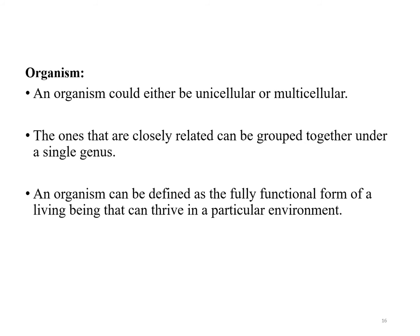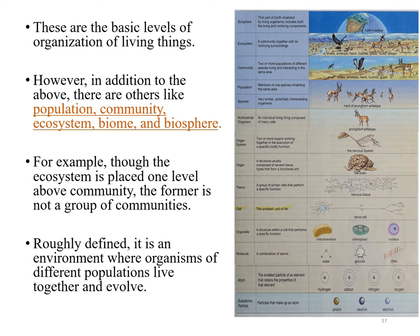Organisms could either be unicellular or multicellular. Those that are closely related can be grouped together under a single genus. An organism can be defined as the fully functional form of a living being that can thrive in a particular environment. These are the basic levels of organization of living things. However, in addition to the above, there are other levels: population, community, ecosystem, biome, and biosphere. It is necessary to know that the higher we go, the more difficult and complicated it becomes to clearly explain the levels — they are not as simply defined as cell, tissue, and organ. For example, though the ecosystem is placed one level above community, it is not merely a group of communities; it is an environment where organisms of different populations live together and evolve.